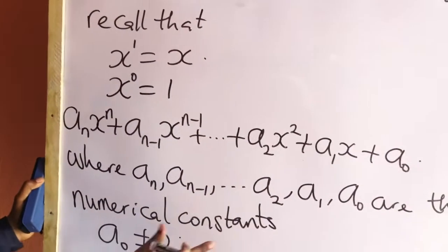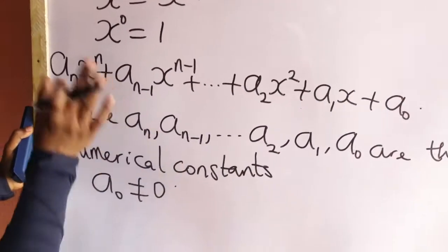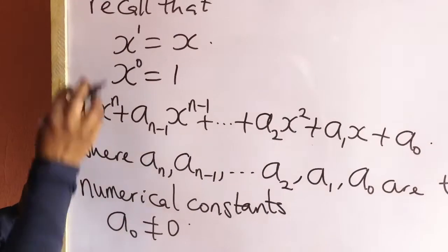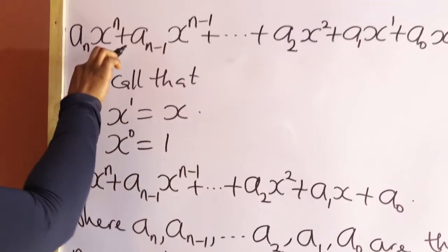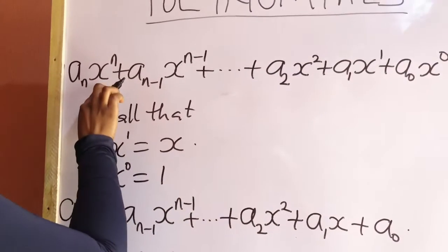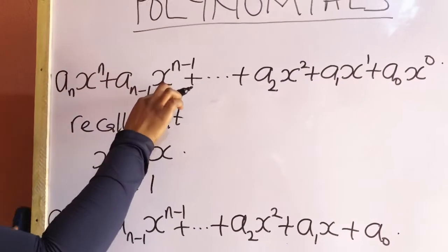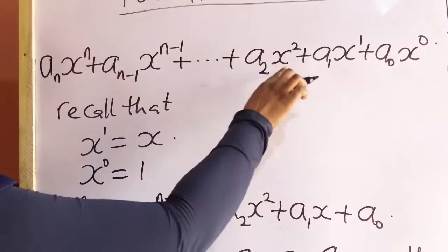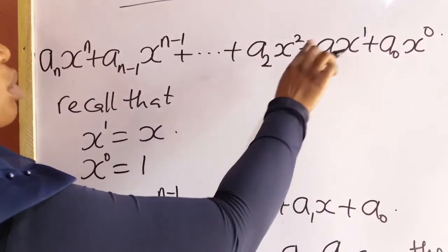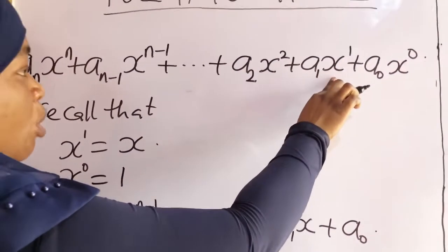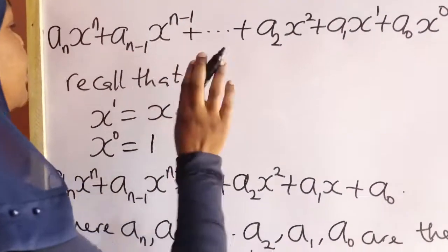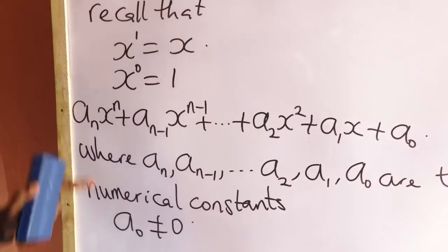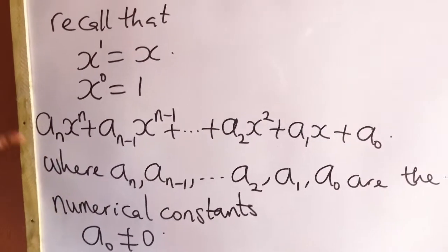Also, these numerical constants are the coefficients of x^n, x^(n-1), x^2, and x^1 respectively. So you have to understand those rules.